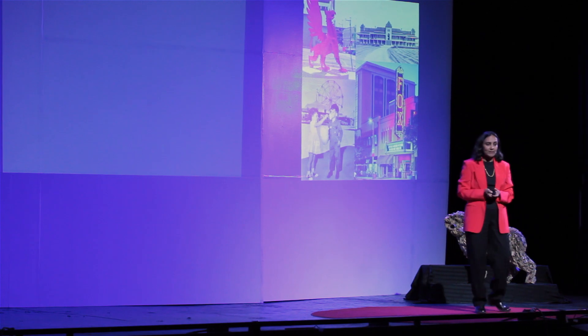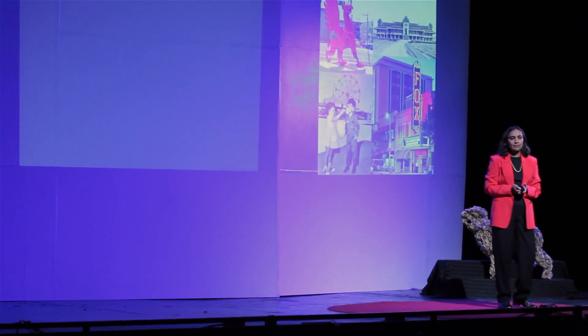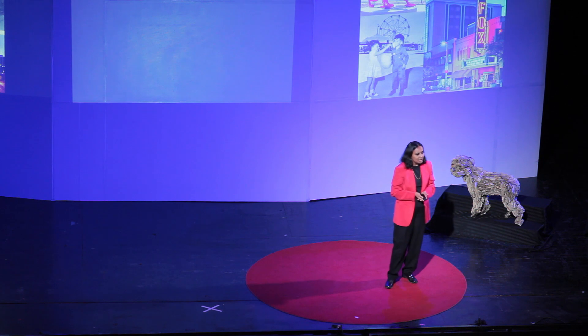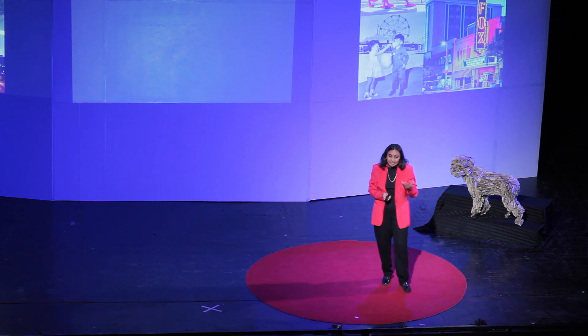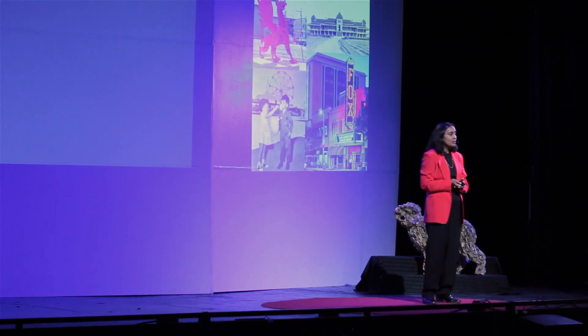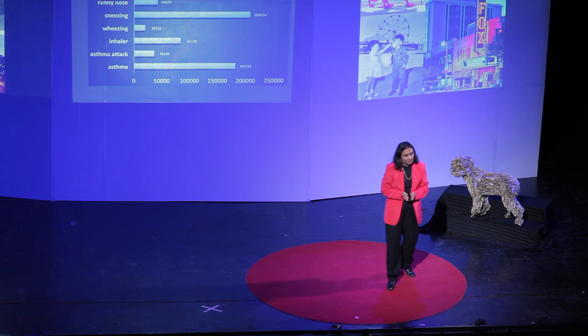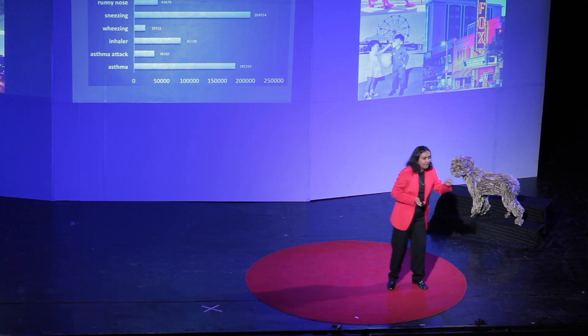You look at Twitter and say, what's the big deal — 140 characters? But there's really a lot of interesting stuff in that: hashtags, URLs, user IDs, timestamps, and locations. We're working with a large hospital dealing with asthma — more than 25 million people in the U.S. suffer from it, and many end up in the emergency room. Can we use big data to build real-time models that predict when people are going to rush to the emergency room?